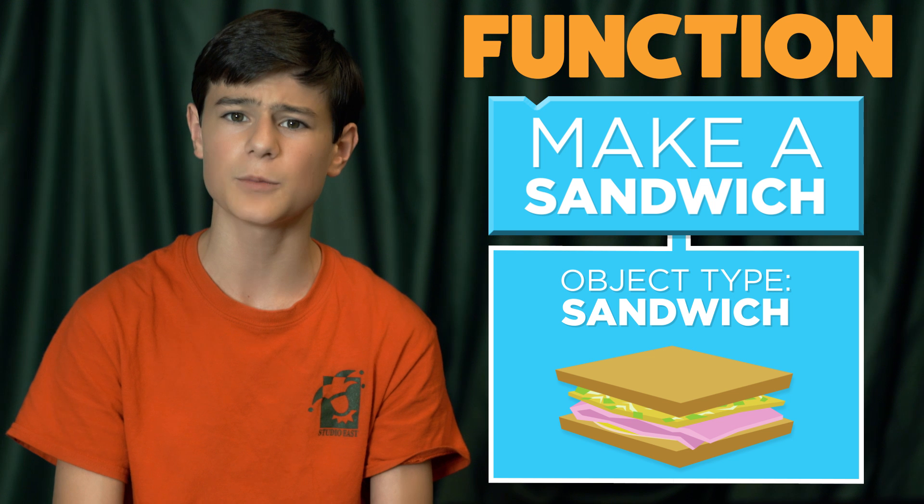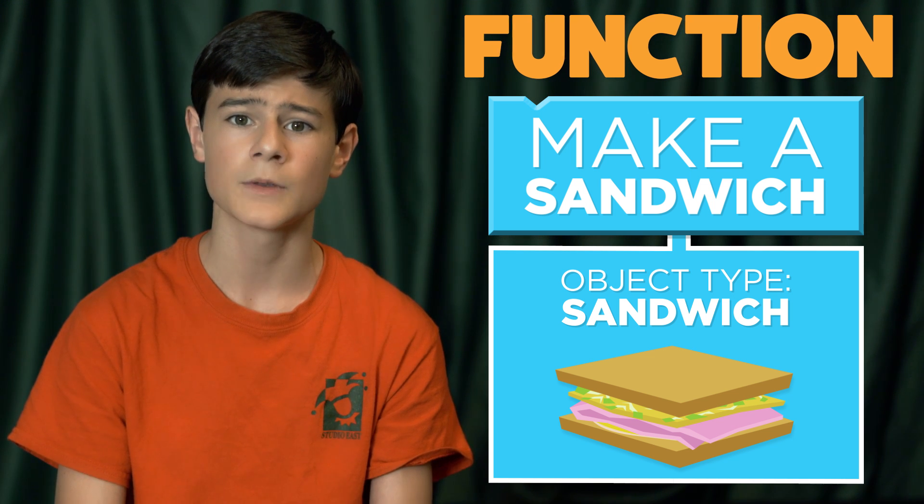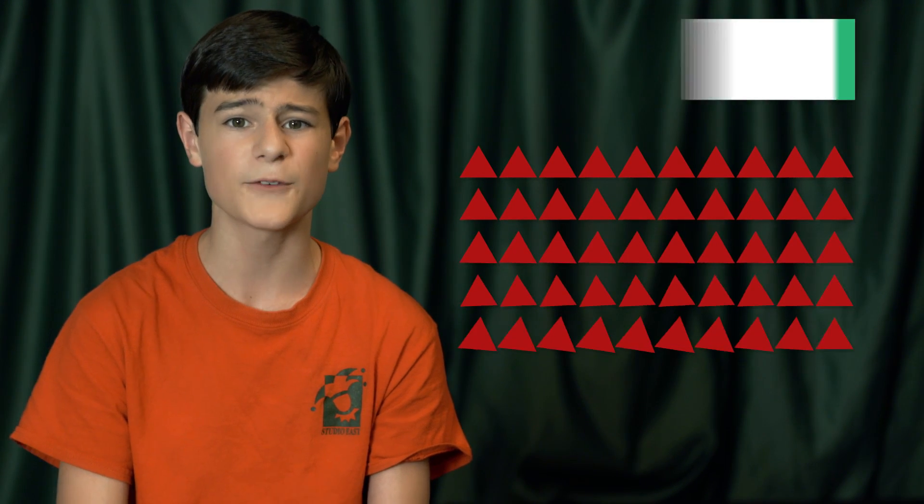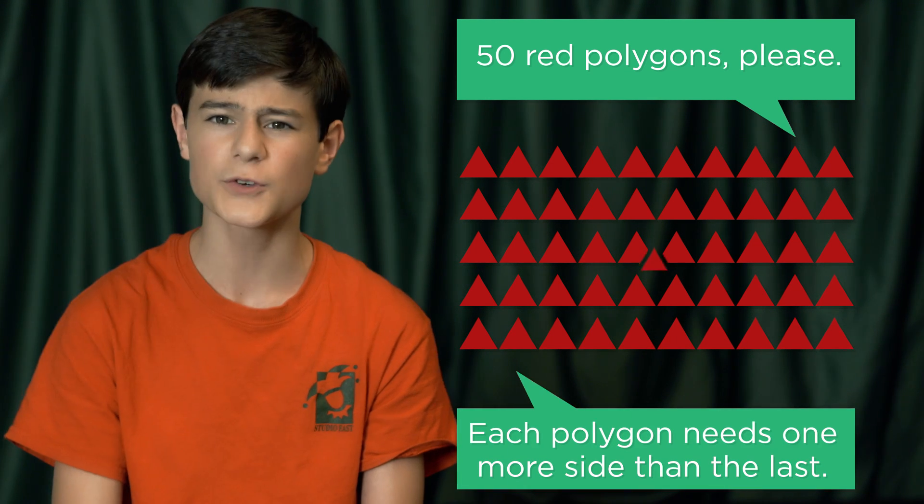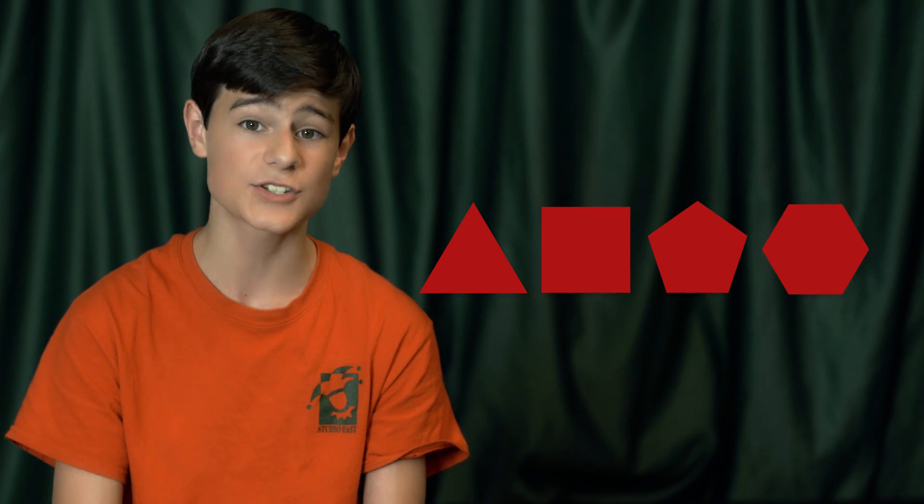Remember our 50 red triangles from the last stage? What if we didn't want 50 of the exact same shape, but 50 red polygons, each one with one more side than the last? First triangle, then a square, a pentagon, a hexagon, and so on.